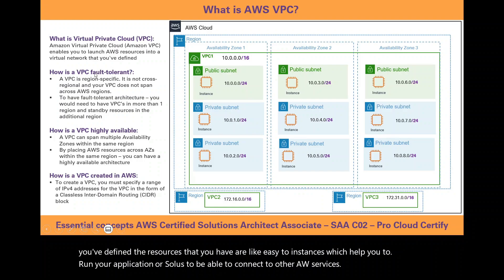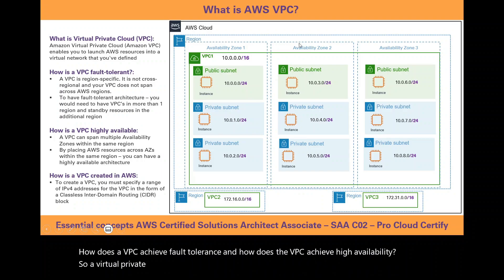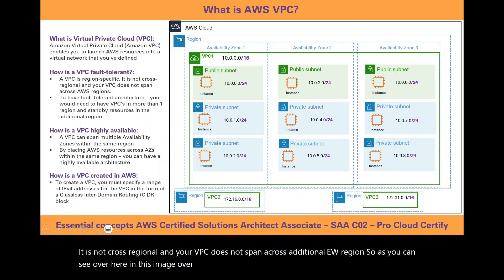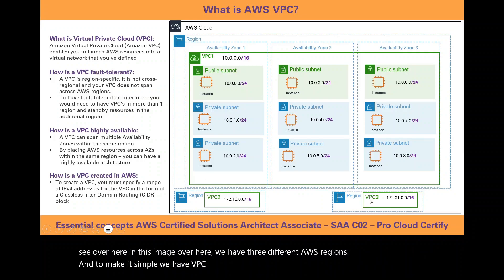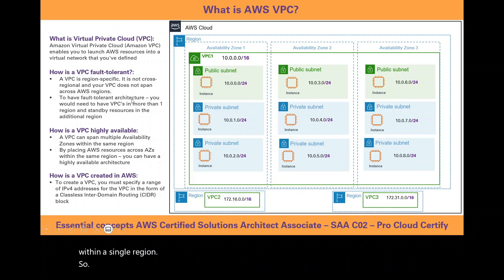How does a VPC achieve fault tolerance and high availability? A Virtual Private Cloud is region-specific; it is not cross-regional and does not span across additional AWS regions. In this image, we have three different AWS regions with VPC1, VPC2, and VPC3. Your single VPC does not span across regions — it spans across the availability zones within a single region. In order to have a fault-tolerant architecture, you would need VPCs in more than one region and standby resources in the additional region.